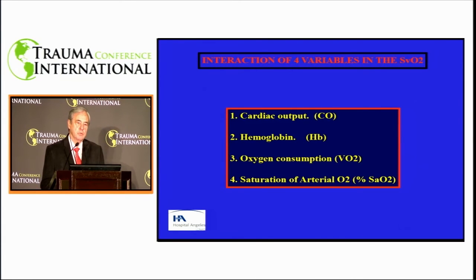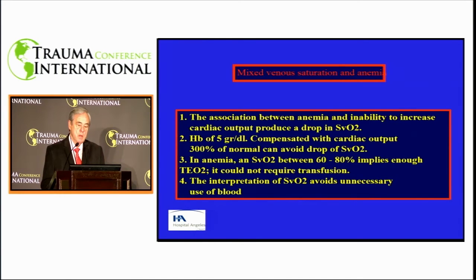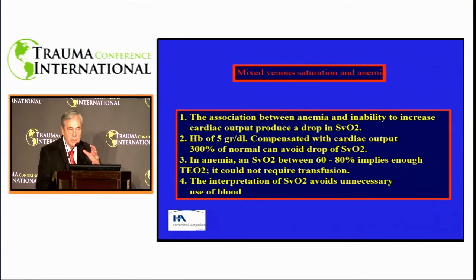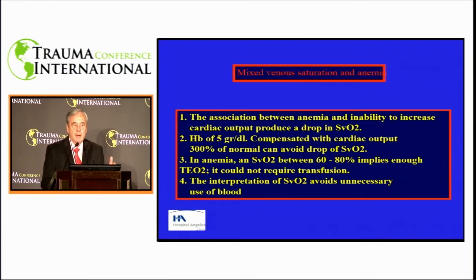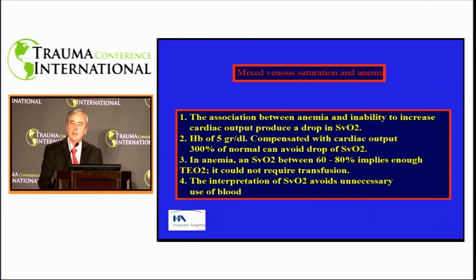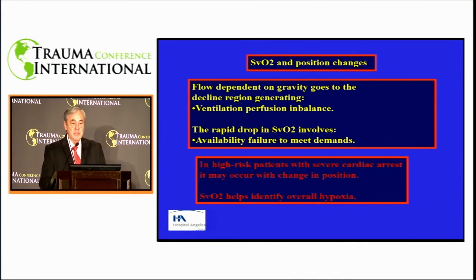There are four key variables for oxygen transportation. There are conditions where central venous oxygen saturation can help us figure out what's happening. Our body is so extraordinary that, for example, in Mexico on the mountainside in Puebla, there are people that live with 1.8 grams of hemoglobin who climb up the mountain and do exercise—they are used to this process taking place over a long time, and the body has to make a series of adaptations to achieve this.